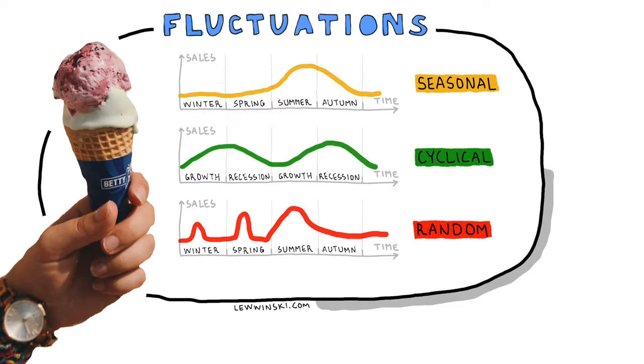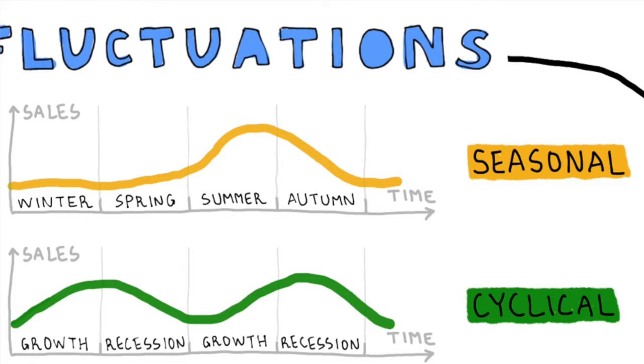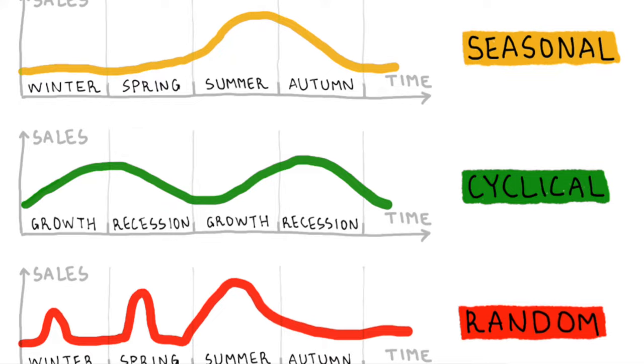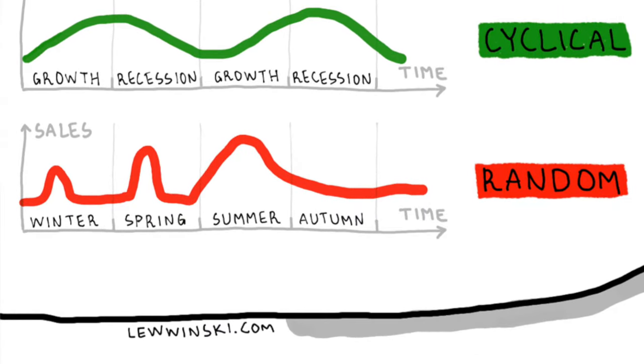In this picture you can see fluctuations for ice cream sales: seasonal fluctuations where in summer ice cream sales go up, cyclical fluctuations where ice cream sales overlap with the business cycle, and random fluctuations when for some reason ice cream sales increase in winter and spring. You are not expected to calculate moving averages and variations, but if you are provided with this data in the case study, you are expected to interpret it, analyze the trends and patterns, and make conclusions and judgments based on this data.